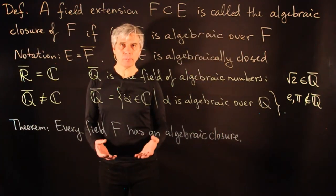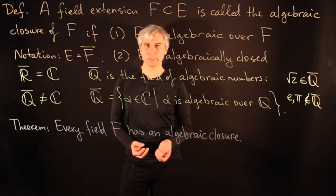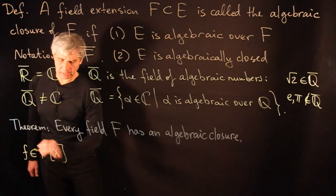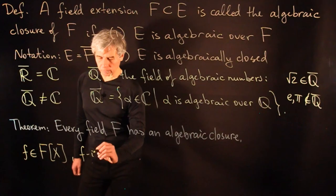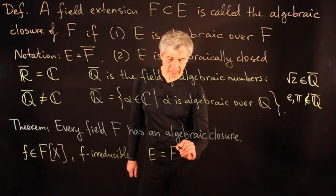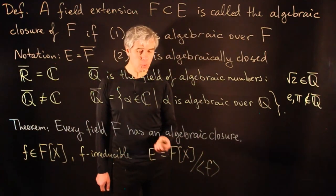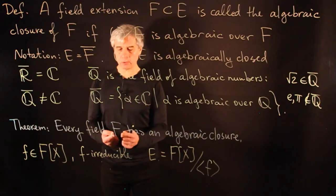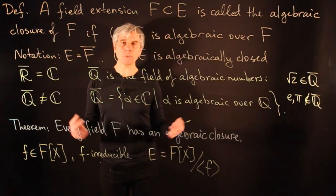The algebraic idea for the proof is very simple: we take the field and add to it the roots of all polynomials. For a single polynomial, this is easy. If we have an irreducible polynomial f in F[x] and want to adjoin a root to F, it is sufficient to consider the extension F[x] quotient by the ideal generated by f. This gives a field containing a root of the irreducible polynomial. Locally there is no problem adjoining roots of polynomials to a given field.